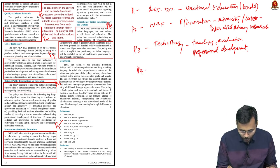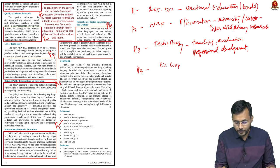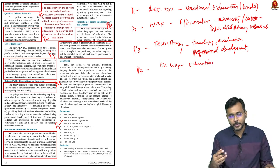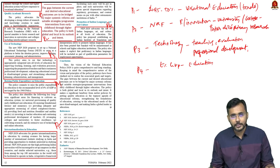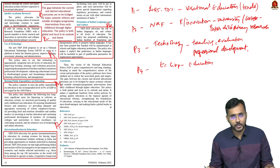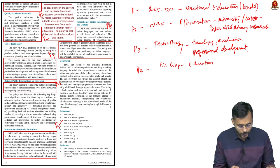The policy makes a promise that 6% of GDP will be spent on education — this is a global standard. When an economy invests 6% of GDP in education, which is a social infrastructure, it clearly has long-term advantages for the socioeconomic development of society. That is the commitment made under this new education policy.